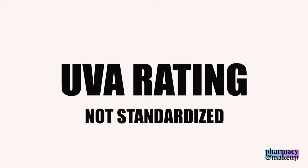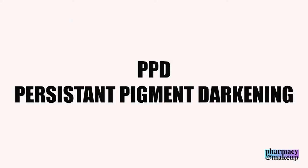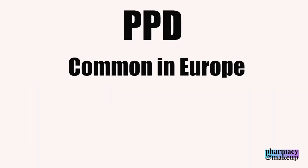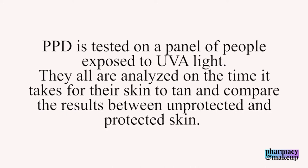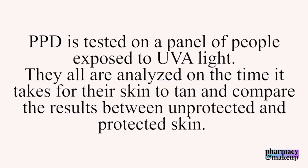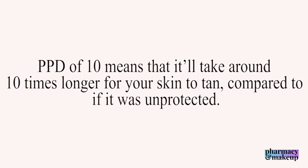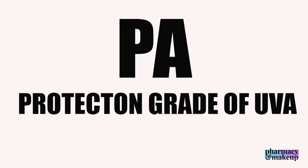There are two commonly used UVA ratings today: PPD and PA. PPD stands for persistent pigment darkening and is equivalent to SPF but for UVA. Common in European sunscreens but developed in Japan, PPD is tested by measuring how long it takes skin to tan under UVA light, comparing unprotected to protected skin. A PPD of 10 means it takes about 10 times longer for skin to tan.